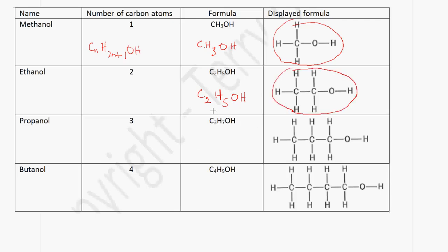In the case of propanol, we have 3 carbon atoms. So it will be C3H7OH — using the formula, 2 multiplied by 3 is 6, plus 1 gives 7. And this will represent the displayed formula for propanol.